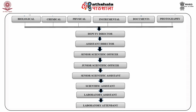The overall hierarchy of the lab goes like this: at the top comes the director, then joint director or additional director, under whom is the scientific cadre for each unit — whether biological, chemical, physical, instrumental, document or photography. Each unit comprises a deputy director, assistant director, senior scientific officer, junior scientific officer, senior scientific assistant, scientific assistant, and lab assistant.